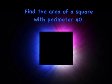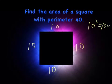Here's another problem. Find the area of a square with perimeter 40. If the perimeter is 40, that means each side is 10. We know in this example that the area of this is 10 squared or 100 square units.